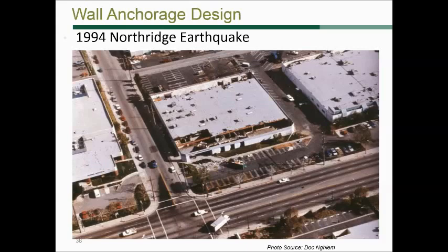The wall-to-roof anchorage and its design provisions are a really important part of this system, mostly because there have been problems over the last few decades with seismic events and the code has been evolving most quickly in this area. Key issues include cross-grain bending, wall anchorage design forces, eccentricity issues, pilaster issues, continuity ties, and sub-diaphragms as a unique tool for making these buildings more efficient.